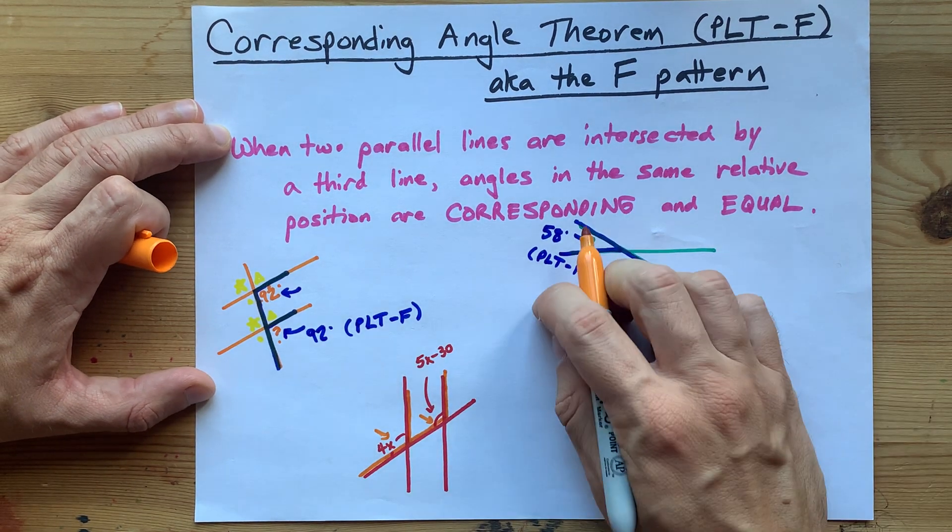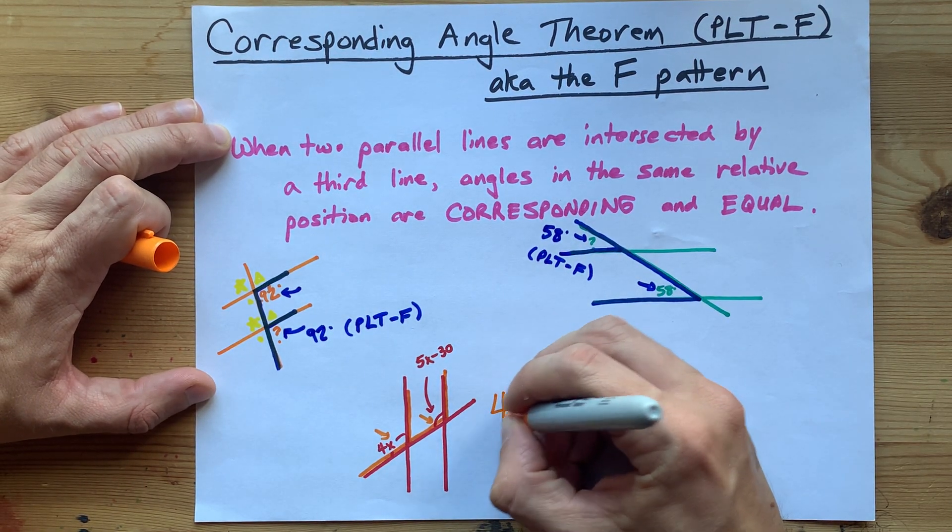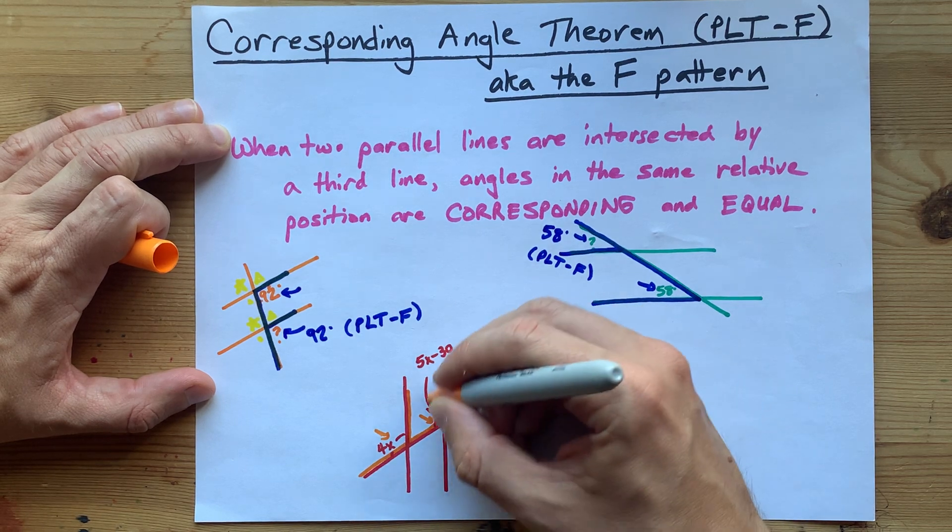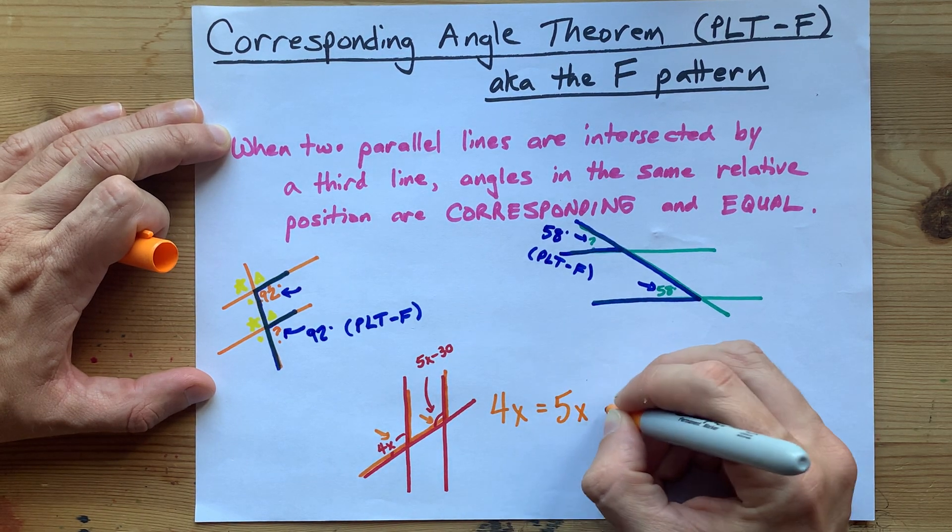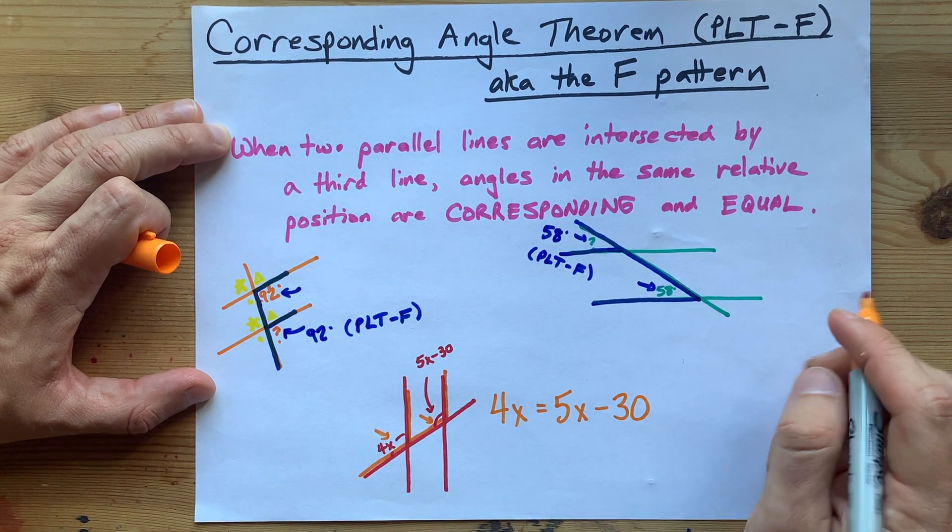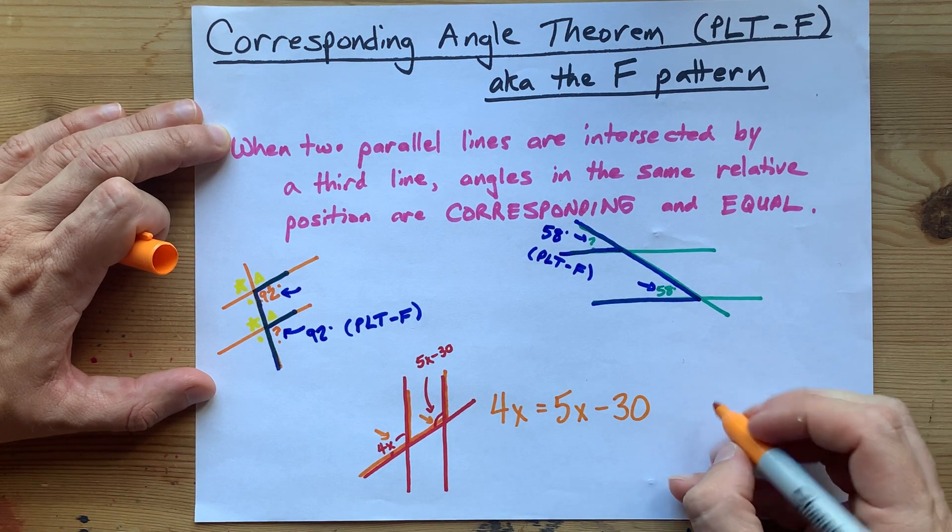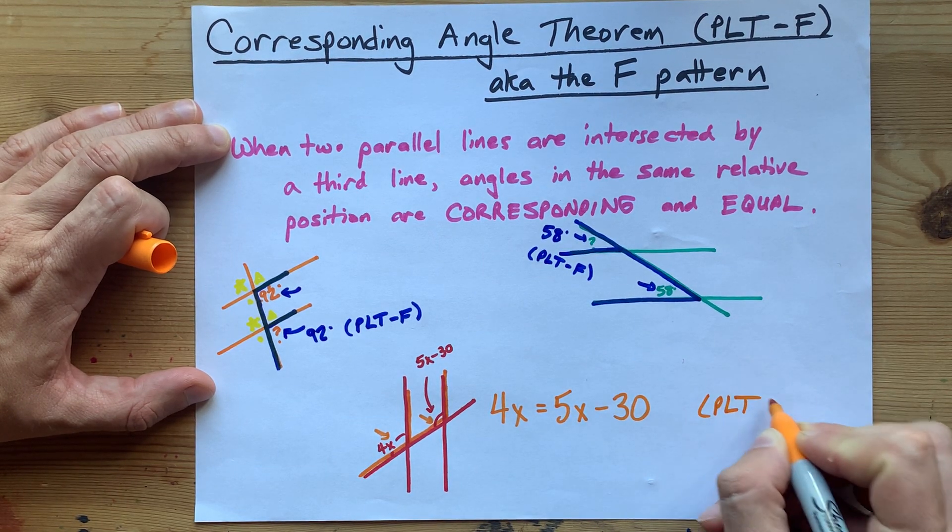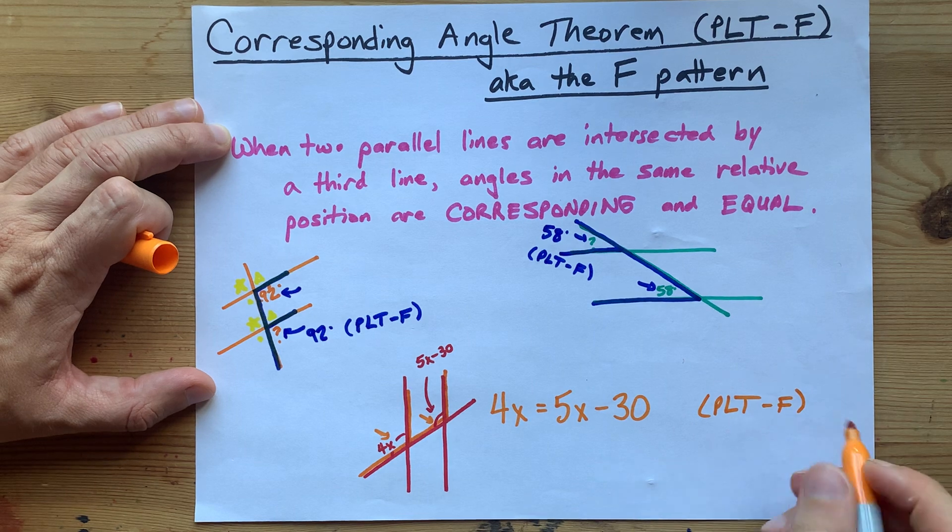Now, corresponding angles are equal, so 4X is the same as 5X minus 30. And this is just an equation that I have to solve. To create that equation, I used PLT-F, so there we go.